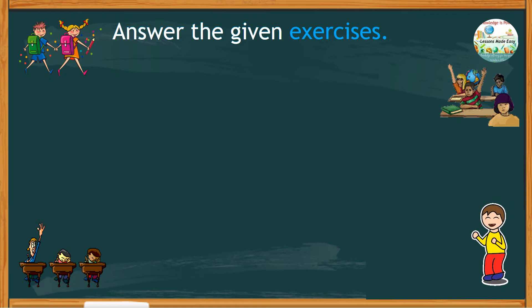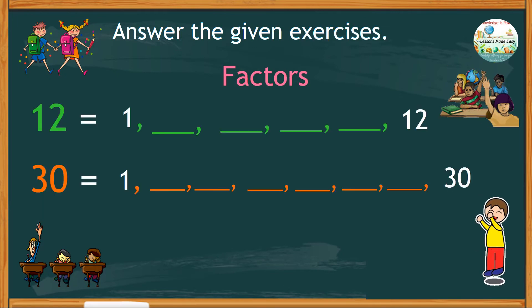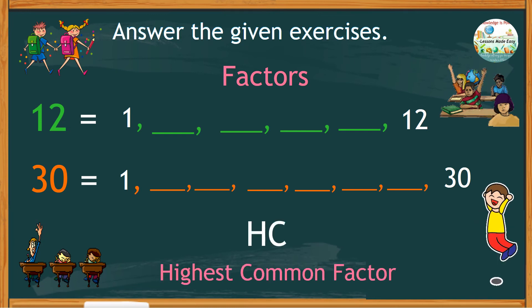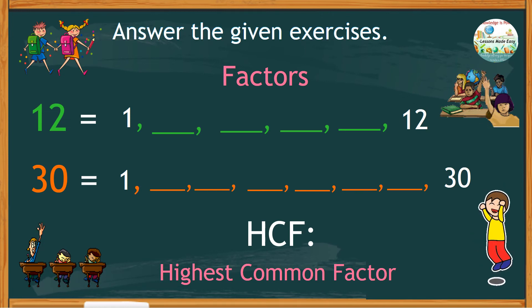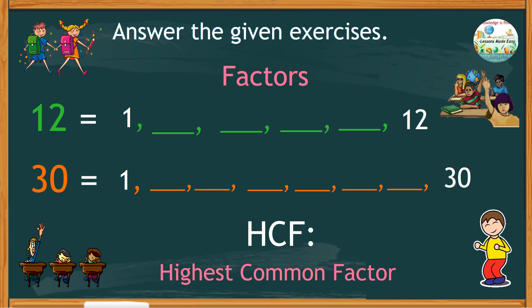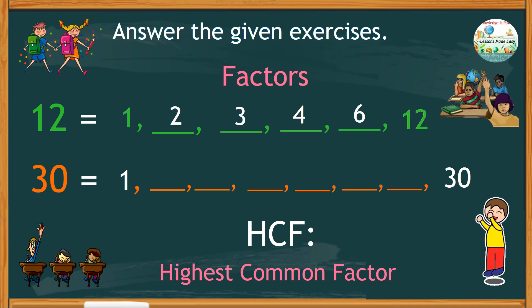Before we end our lesson, let's try to answer some exercises. Find the factors of 12 and 30, and identify the highest common factor or HCF. You can pause the video if you need more time. The factors of 12 are 1, 2, 3, 4, 6, and 12 itself.